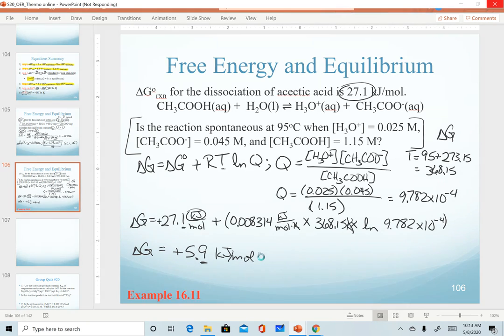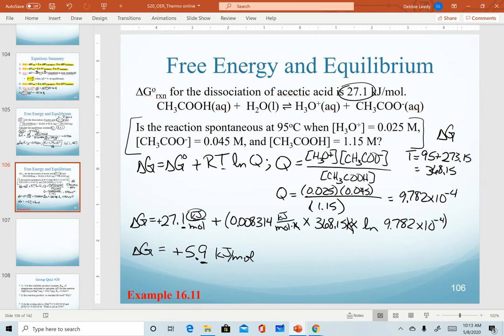Remember that a positive delta G indicates that this is a non-spontaneous reaction. Spontaneous means it's moving forward toward equilibrium. That means that this reaction must be moving in the reverse direction. In other words, we have too much product. We need to make more reactant, and so it's going in the reverse to reach equilibrium. A great extra practice problem for you is example 16.11 in the OpenStax textbook.